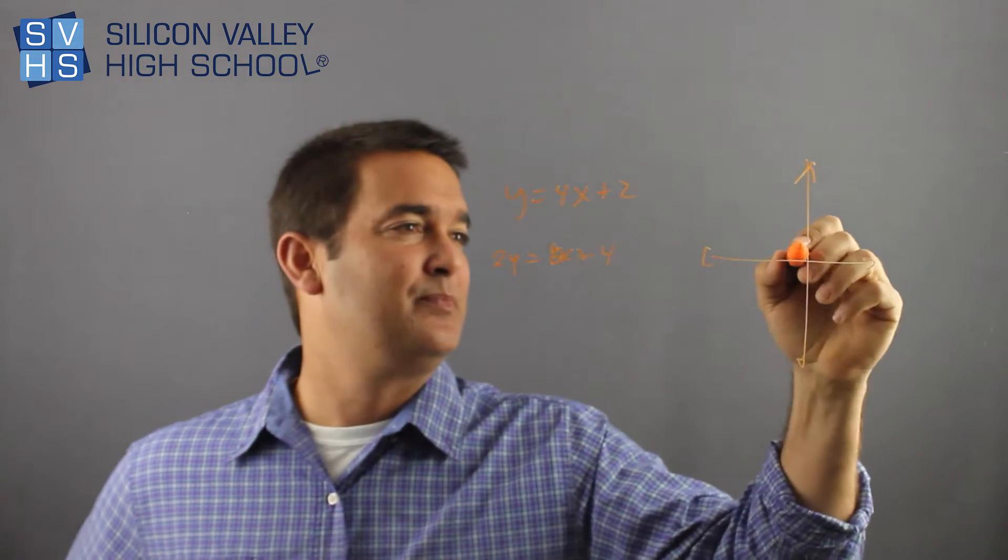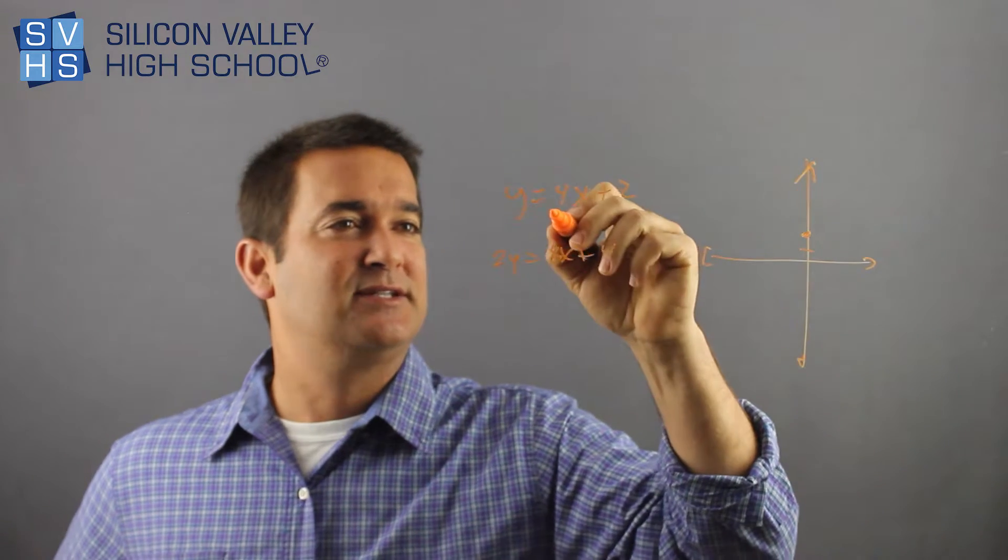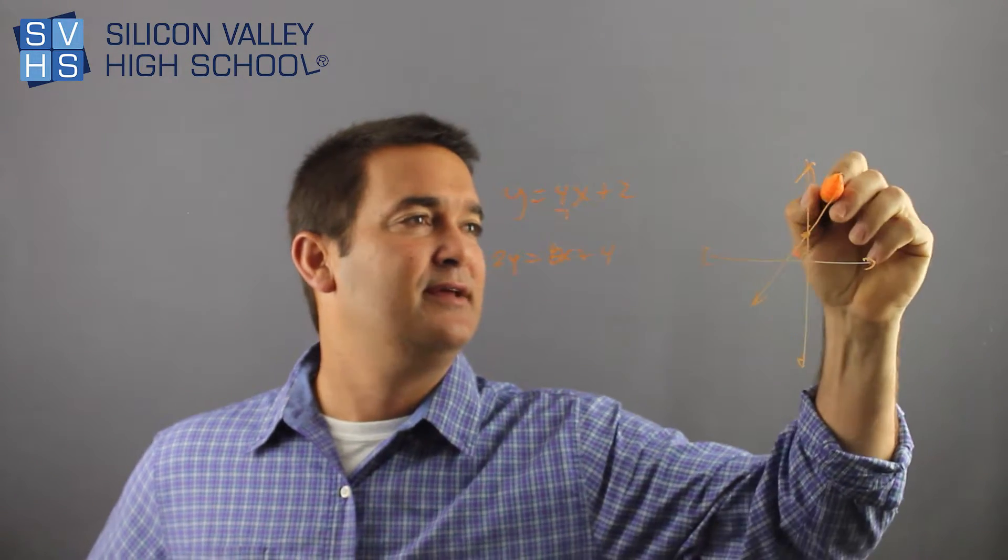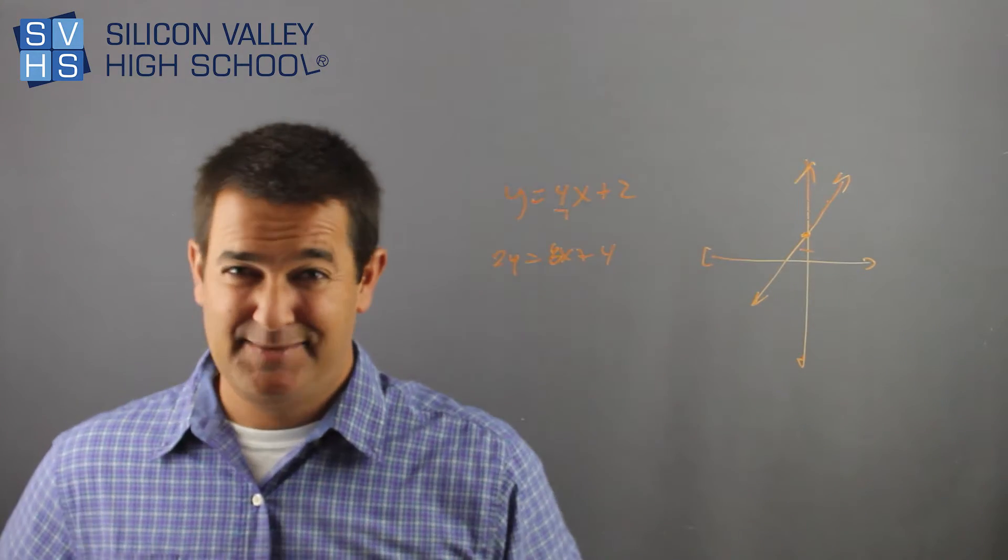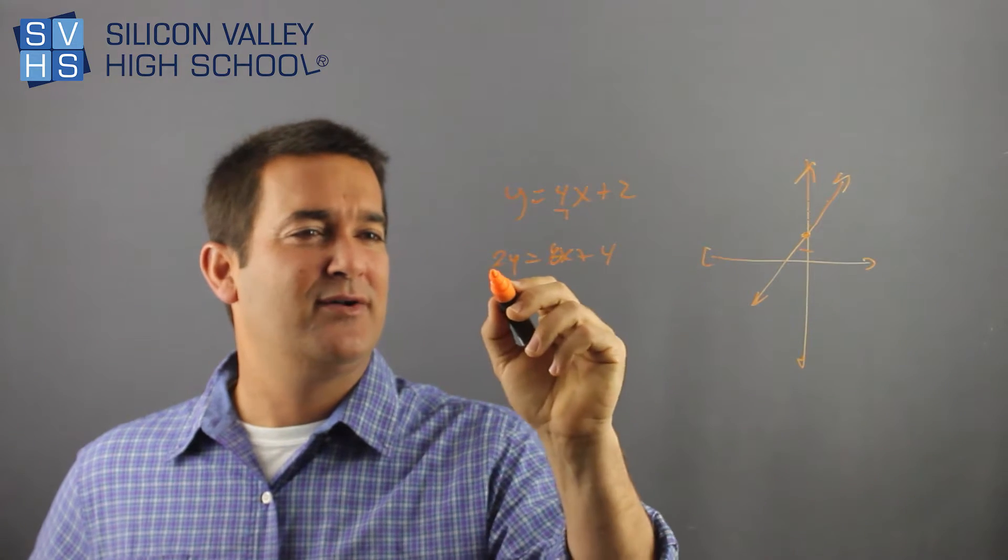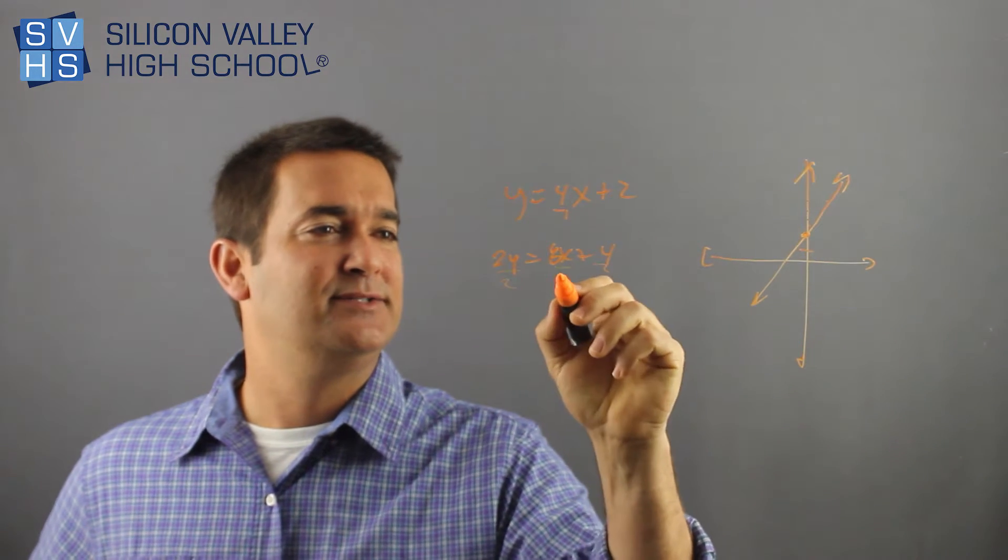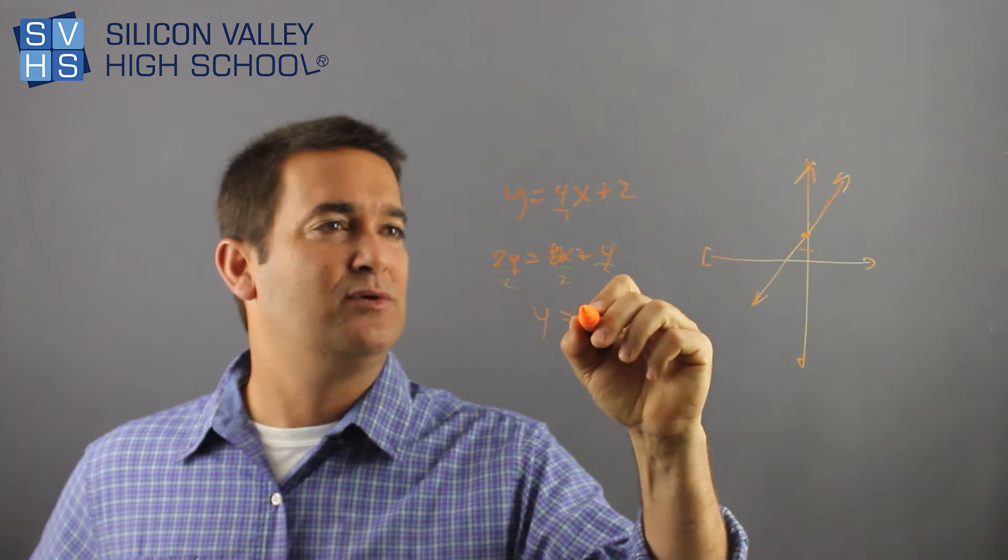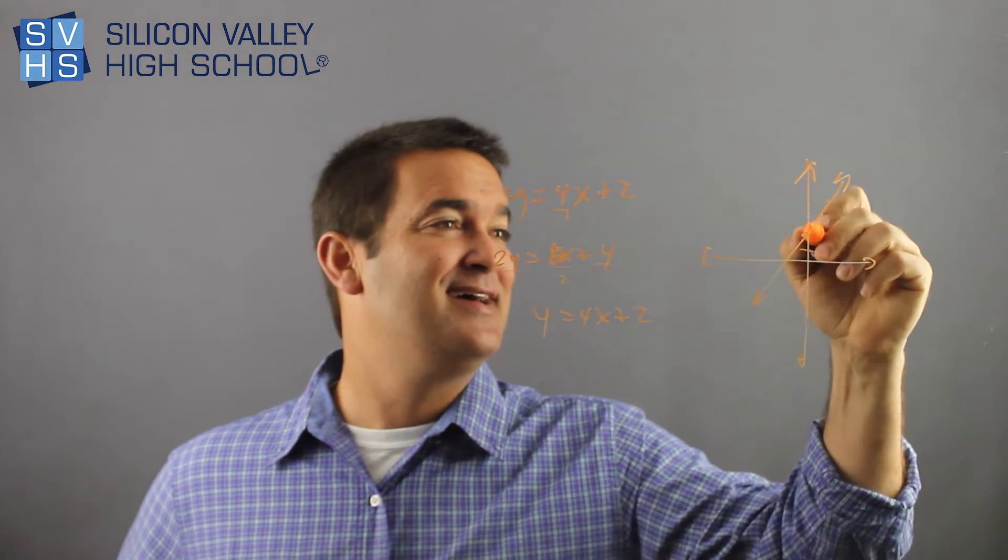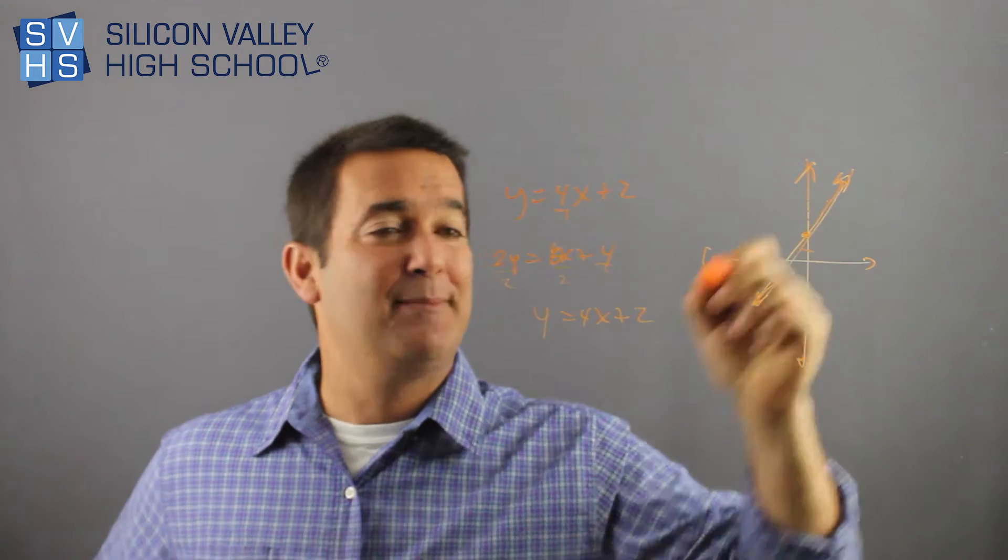First one, up 2, 1, 2, and then my slope is up 4 over 1, 1, 2, 3, 4 over 1, there you go, perfect. This one is not ready to be graphed. I have to get this into slope-intercept form, so to get y alone, I'll divide everybody by 2. 2, 2, 2, y equals, wait a minute, it's the same line. So now if I graph this up to, it'd be on top of the other line.